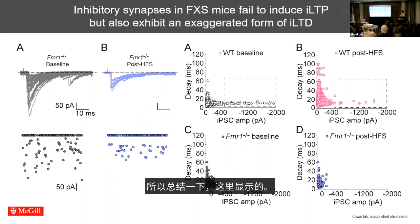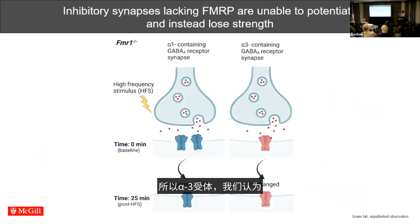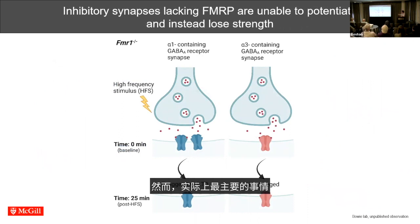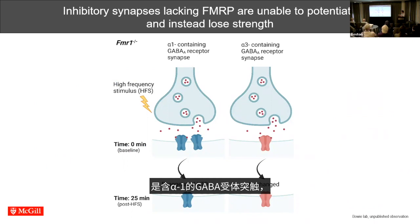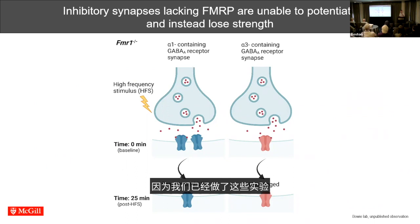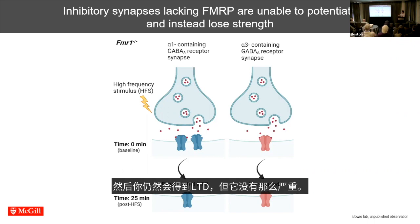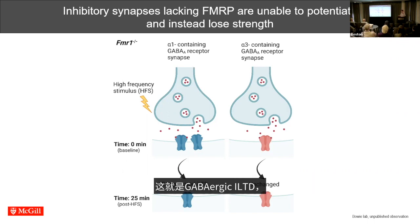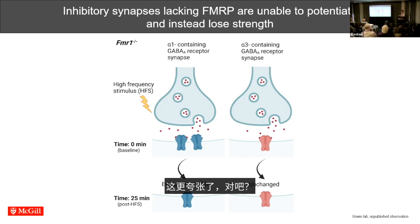To summarize: in fragile X mice the alpha-3 receptors appear unchanged, but the big phenotype involves alpha-1-containing GABA receptor synapses showing an exaggerated form of inhibitory LTD. We've confirmed this using alpha-3 knockout mice, where you still get LTD but it's not as severe. So something in the absence of FMRP makes this GABAergic ILTD — distinct from the mGluR-LTD that Mark Bear described — much more exaggerated.